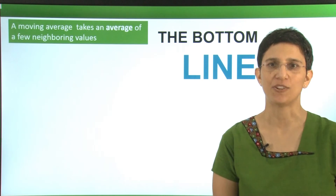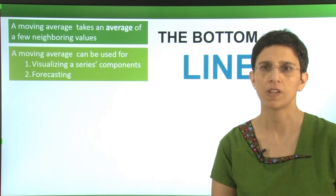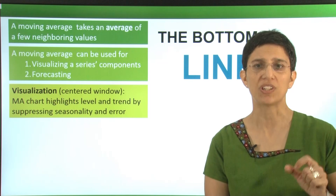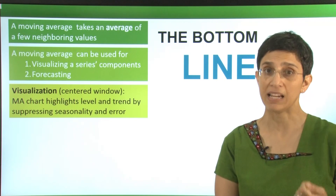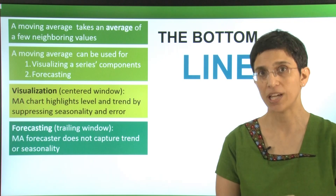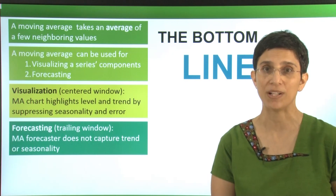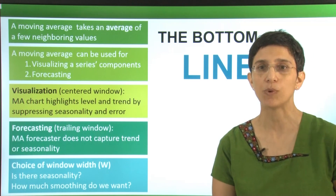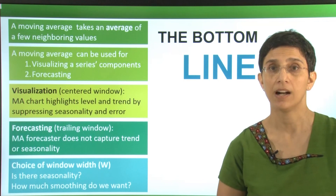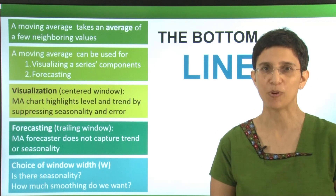The bottom line with a moving average forecaster: it takes an average of the most recent points and can be used for both visualization and forecasting. For visualization, we use a centered window, which highlights level and trend by suppressing error and seasonality. For forecasting, we use a trailing window, but remember it does not capture seasonality or trend, so it's better used only on series that do not have those components. When choosing window width, think about over-smoothing versus under-smoothing. With this, we conclude the discussion of the moving average, and we're going to talk next about an operation called differencing.